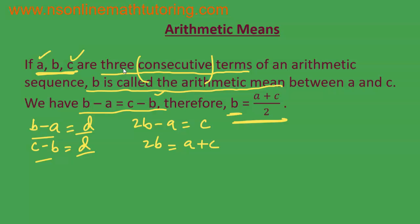You may remember that we solved a question where we were asked to insert three numbers between two given numbers so that all five form an arithmetic sequence. Instead of saying 'insert three numbers,' they may ask us to 'insert three arithmetic means,' and the procedure is exactly the same. For example, given 2 and 5, inserting two numbers so all four form an arithmetic sequence gives us 3 and 4 — no calculation needed.